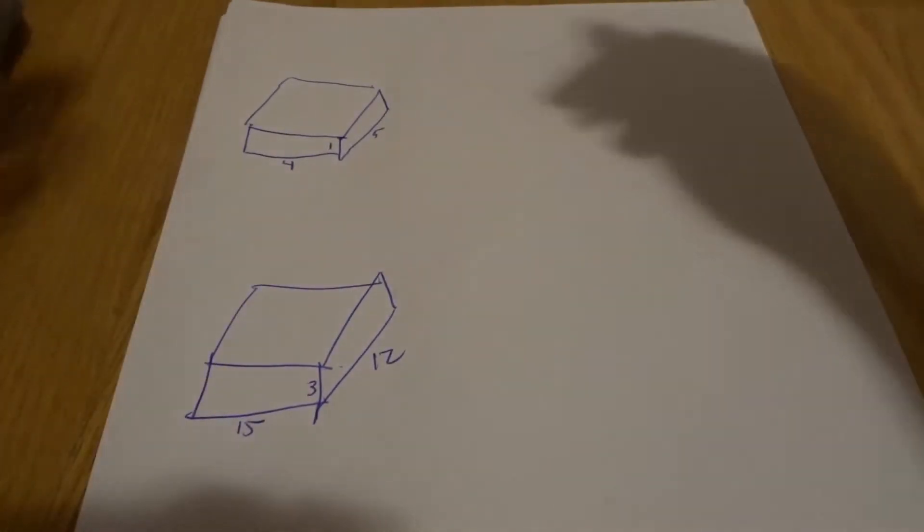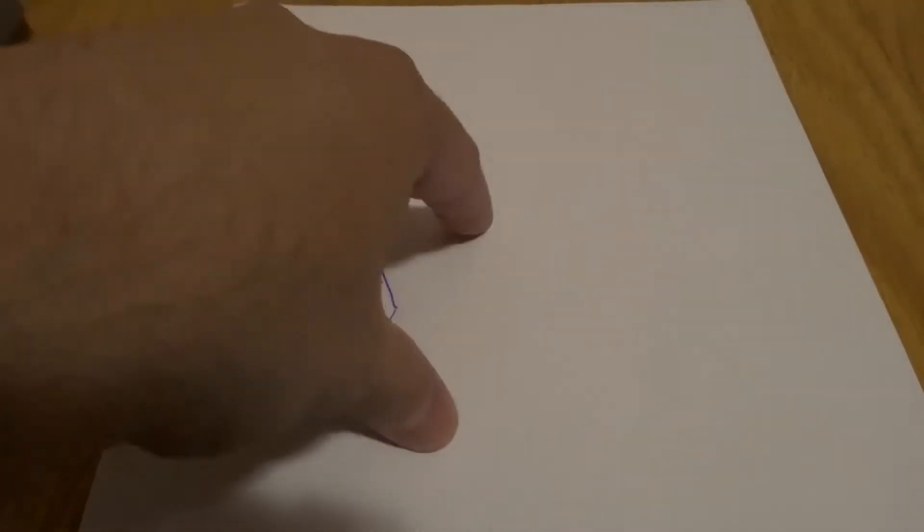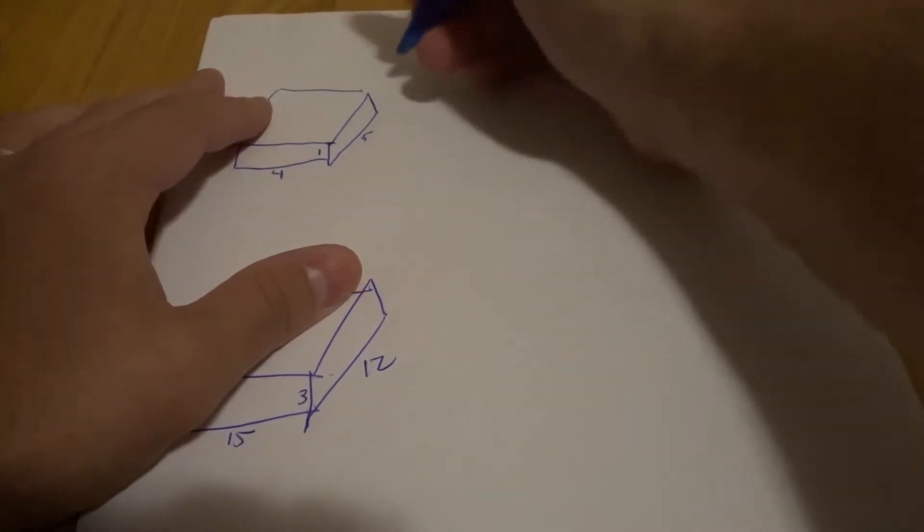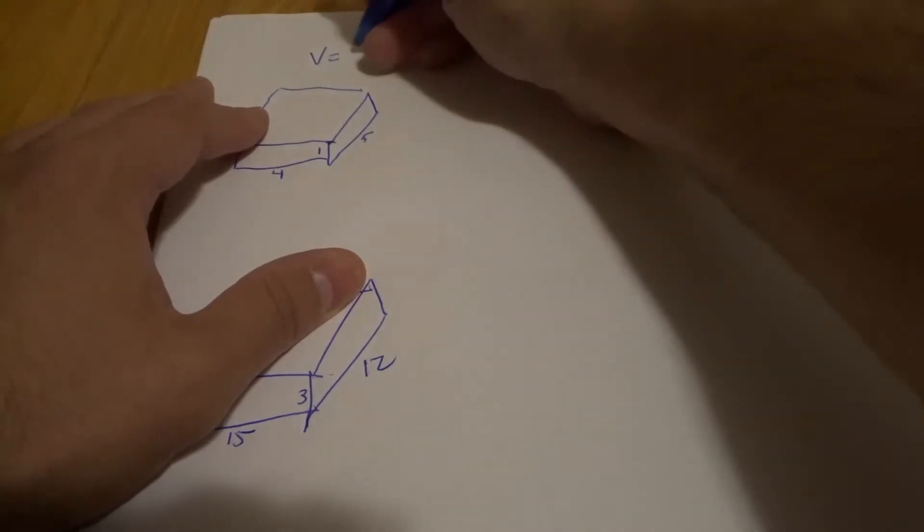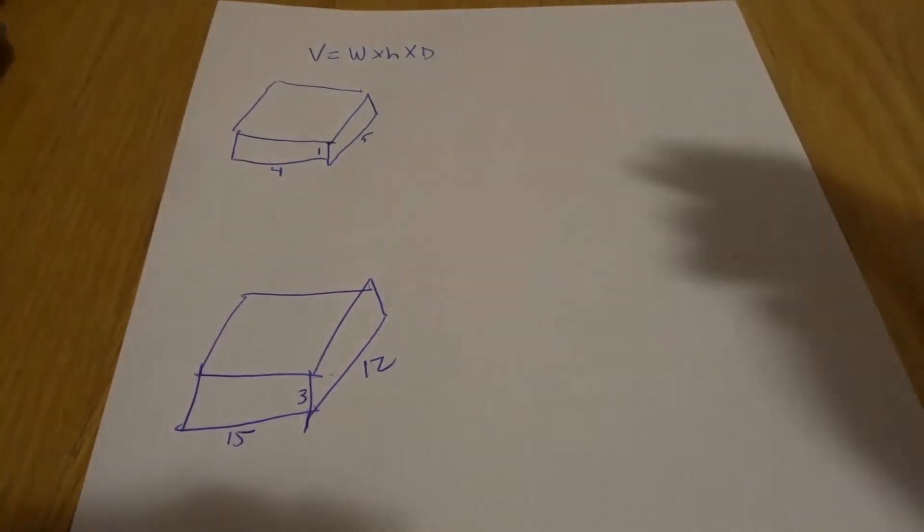If you want to find volume, you basically have to multiply your width, your height, and your depth. So I'll write that down at the top in short form. Your volume equals your width times your height times your depth, and obviously these can be in any order because you're multiplying them all.